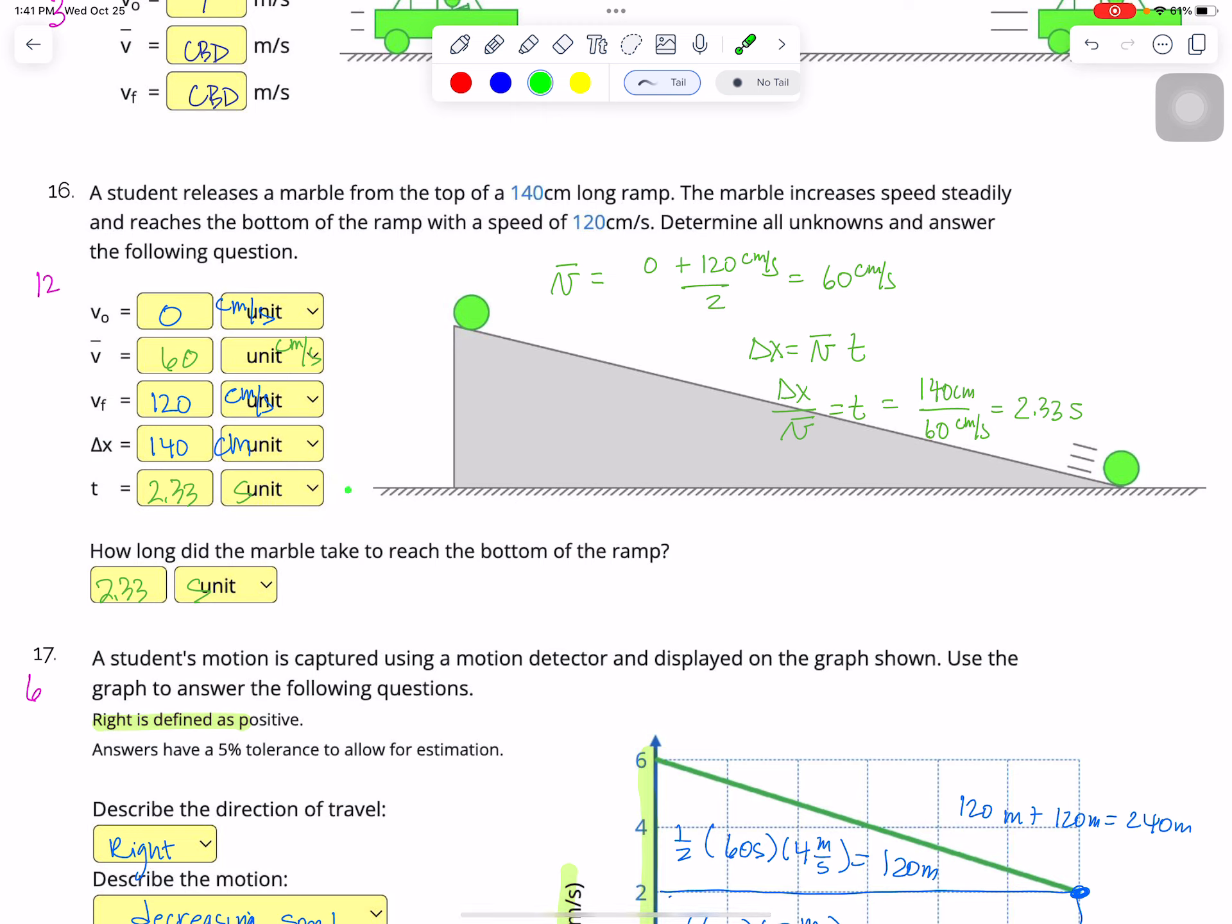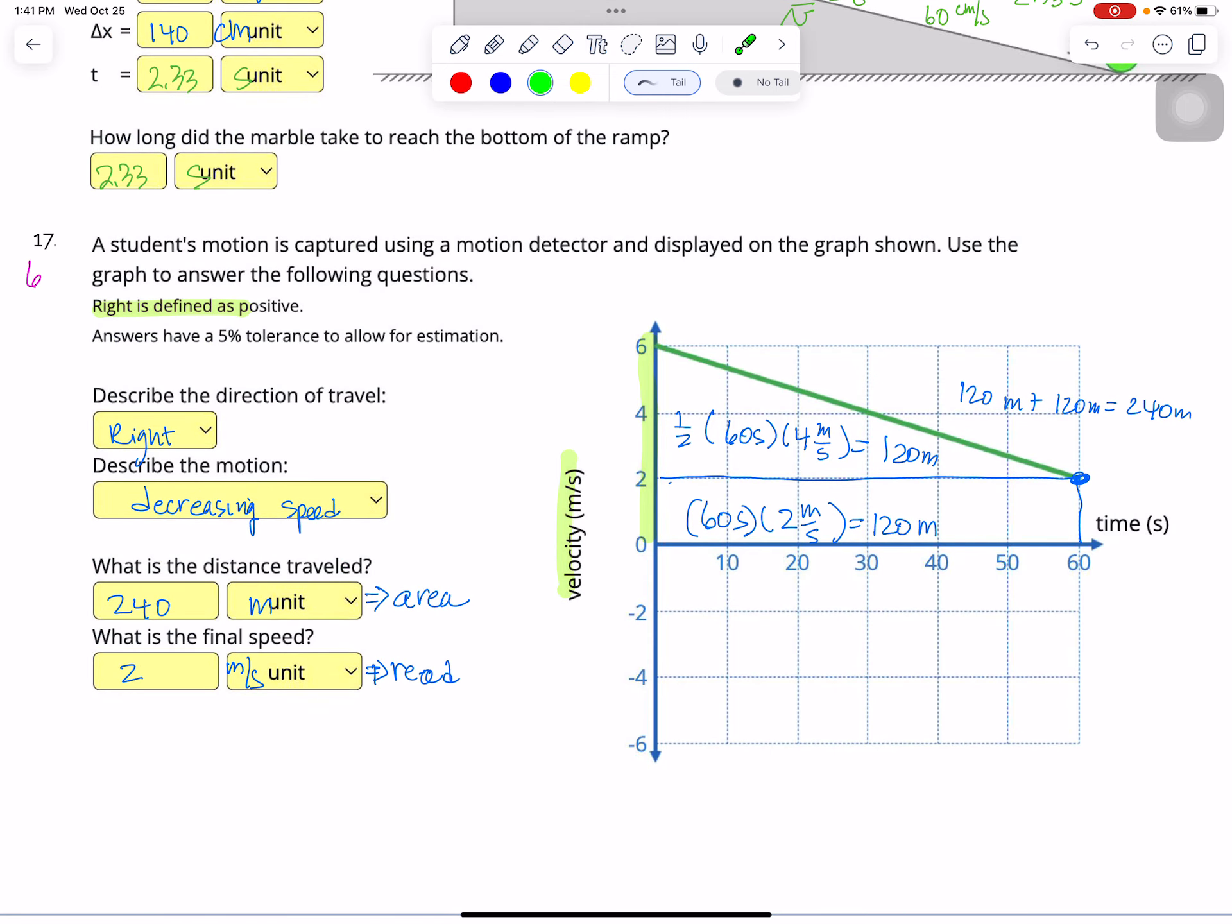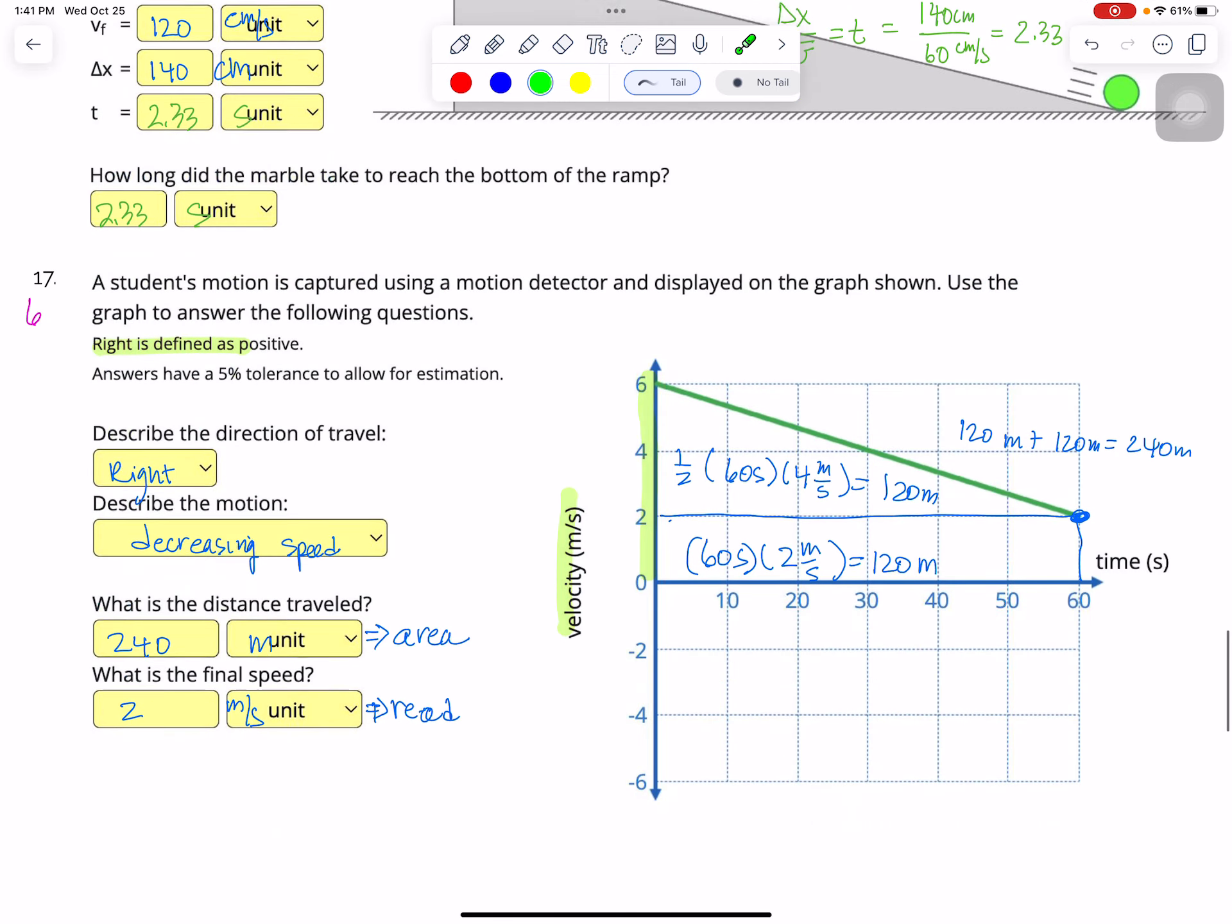And then in order to find the time, I'm going to use this equation. I know displacement, I know average velocity. So I divide both sides by average velocity. That gives me that equals time. Substitute in my numbers. And I get 2.33 seconds. So that's those two. And that was 12 blanks. So 12 points.